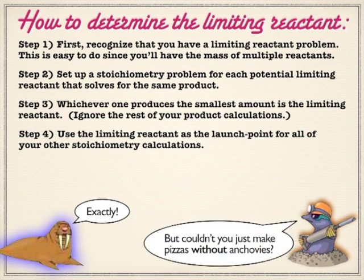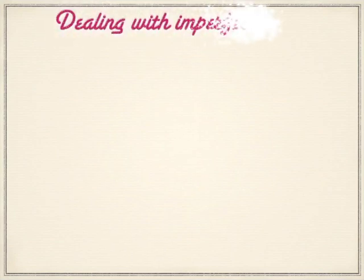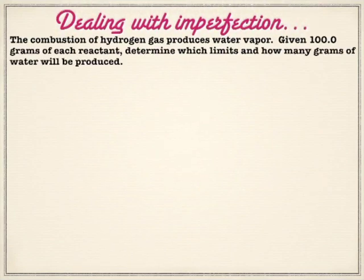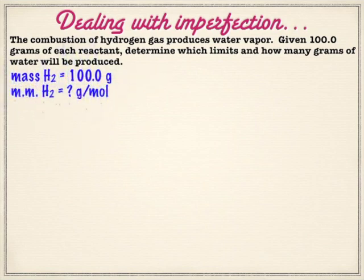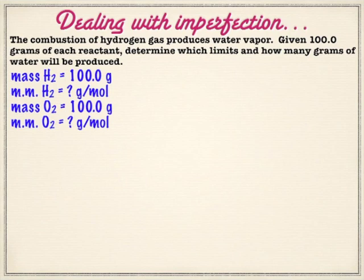Of course, you could just make pizza without anchovies. So let's deal with this problem: I have 100 grams of each reactant for the combustion of hydrogen. What limits, and how many grams of water will be produced? Remember, you do not have to start a limiting reactant problem with equal masses of each reactant — you could have 10 grams of one and a thousand tons of another. But for simplicity, let's use the same amount of each reactant.